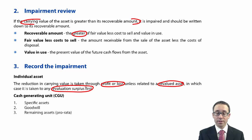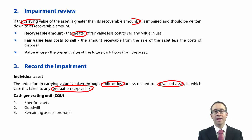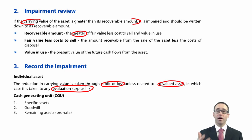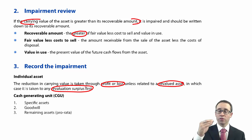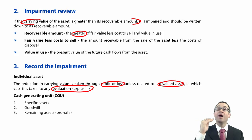For cash generating units, you allocate impairment to a specific asset first — write off whatever specific asset is damaged — then goodwill, and if there is any impairment left, allocate it to the remaining assets on a pro rata basis. This has been seen numerically in past exam questions where you had to work out the impairment in a subsidiary and allocate it to specific assets, then goodwill, then pro rata the remaining assets. Be aware: specific assets first, then goodwill, then any remaining assets pro rata.